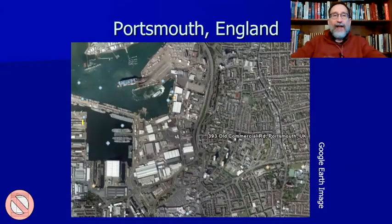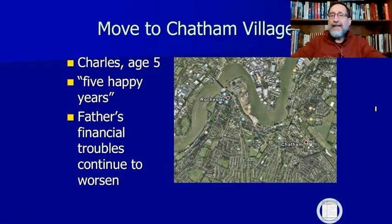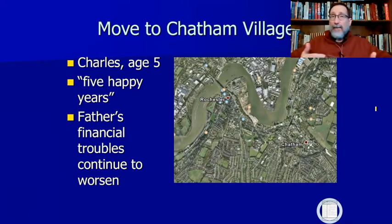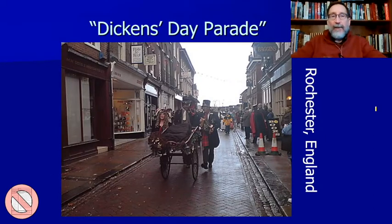This is an aerial shot of Portsmouth. They moved later to a place called Chatham Village, inside the larger town of Rochester. Charles describes those years growing up there as the five happiest years of his childhood. One of the problems in England at the time was that if you borrowed money you could not pay back, you could go to jail — and not only did the debtor go to prison, but the whole family went to prison as well.